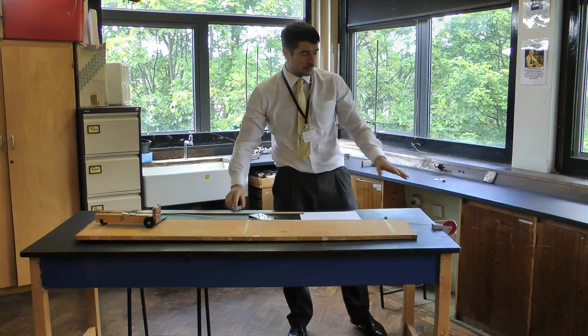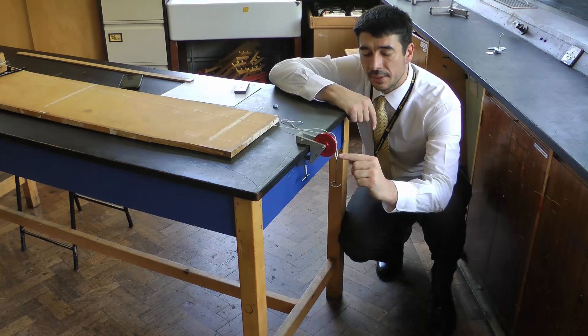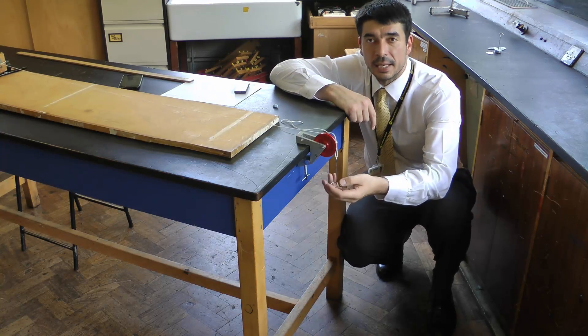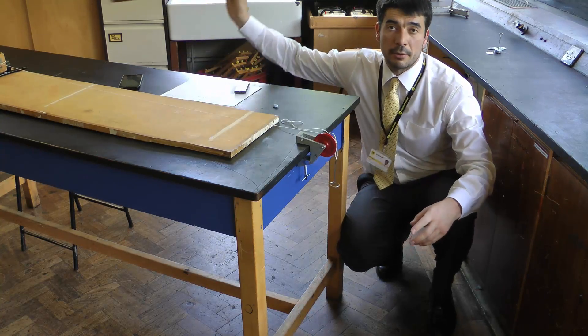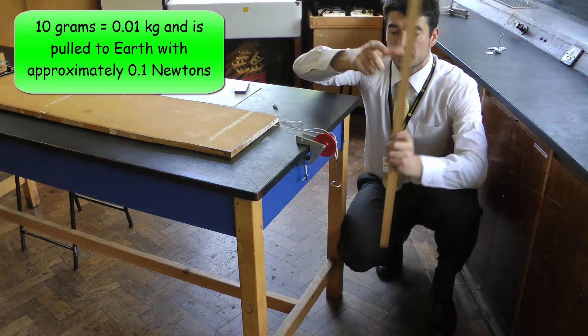Now I'm just going to change the angle so we can see more clearly what's going on here. So the hanger is going to fall. This is basically a ten-gram mass which is going to be pulled by gravity downwards. It's going to fall a set distance.